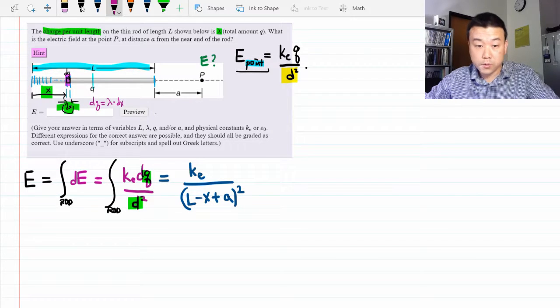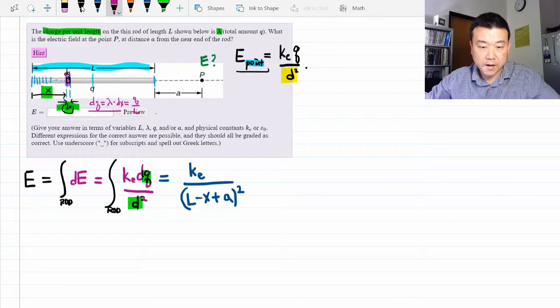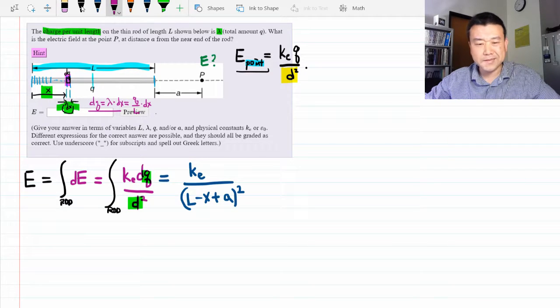And if we want to express this in terms of the total charge on the rod, it will be the total charge divided by length times dx. All right, let me use lambda since that makes my expression simpler.